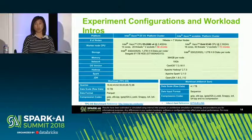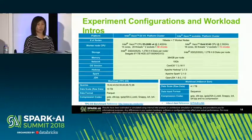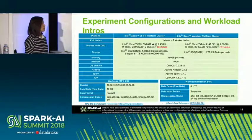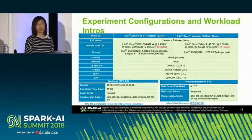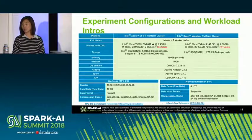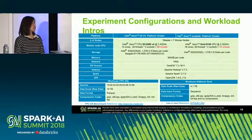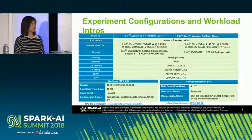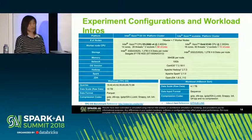Besides microbenchmark, we also picked two famous end-to-end benchmarks. The first is the TPC-DS benchmark — a well-known benchmark where we selected nine queries as a subset. The data scale is 10 terabytes in Parquet format. The other benchmark is HiBench Sort workload, also a famous workload. The data scale is 4.1 terabytes in sequence format. We ran experiments on Intel Skylake hardware platforms with eight nodes: one master and seven worker nodes.